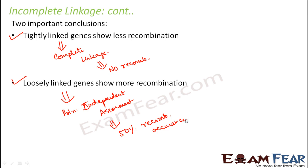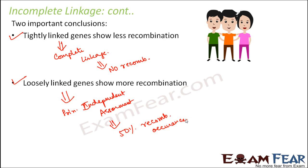You can remember this in a simple way. Suppose you have three friends who are very close to each other — they are always together and never go apart. Their chances of recombining, that is joining some other group of friends, is very less. The tighter the bond between these friends, the lesser the chance that any of them will go and join some other group.